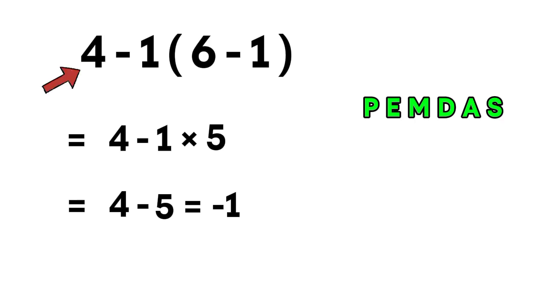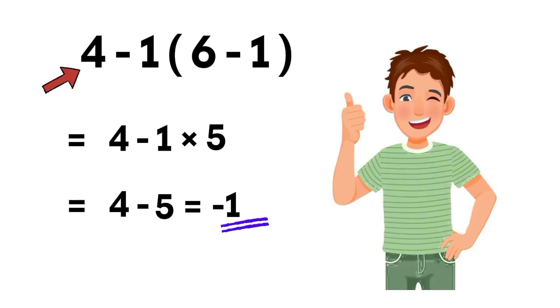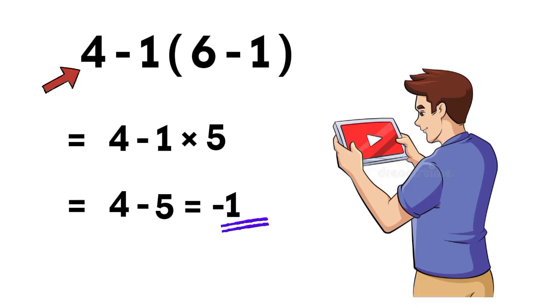So, the correct answer to this problem is negative 1, not 15. Pretty cool, right? This simple example shows how just one small mistake in the order of operations can completely change your answer.